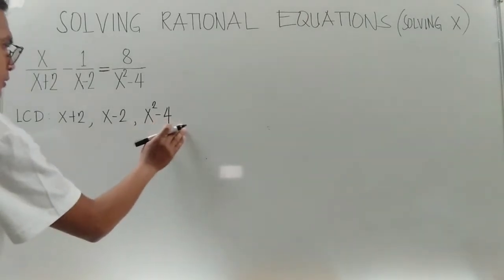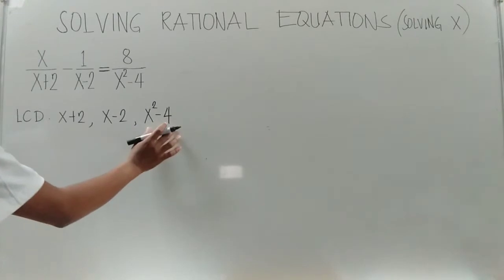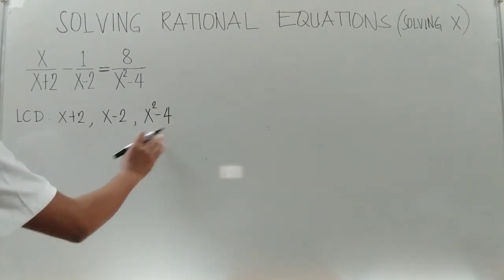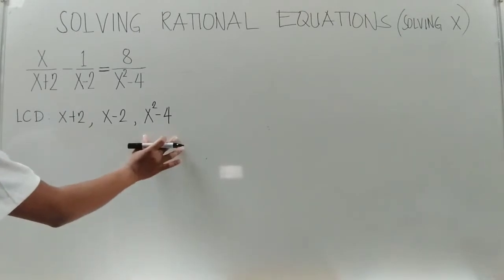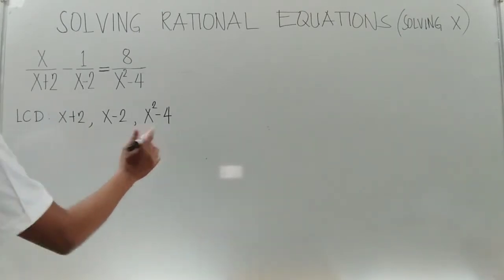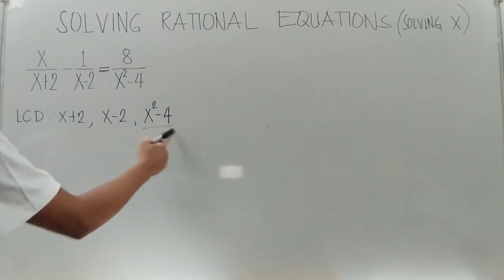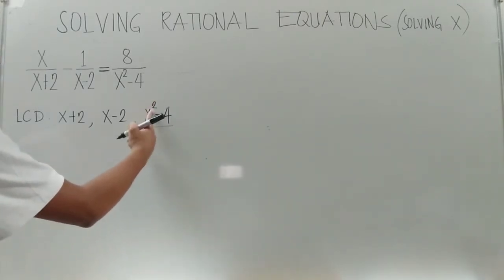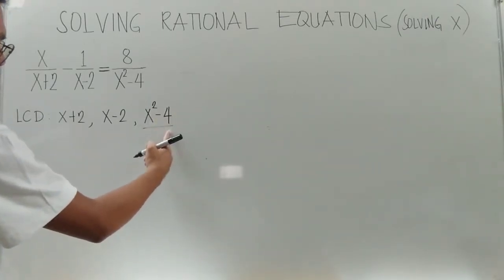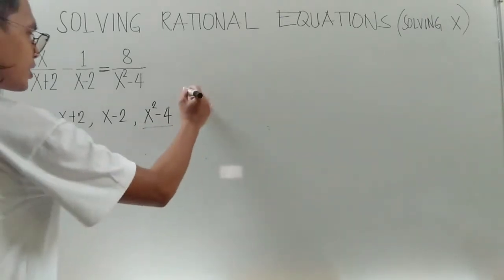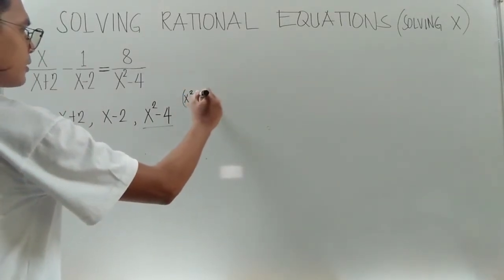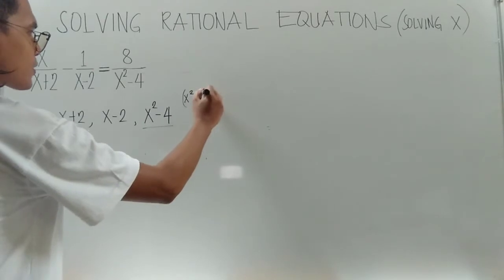Without much ado, let us focus on x squared minus 4. As you can see, x squared minus 4 is a difference of two squares — because the first term is a perfect square and the second term is also a perfect square. Its original form is x squared minus 2 squared.